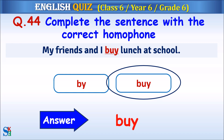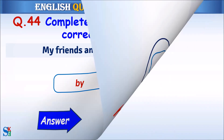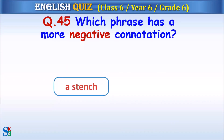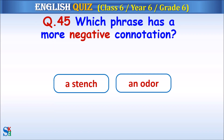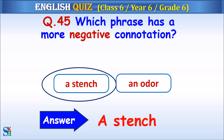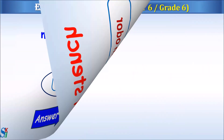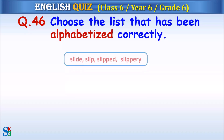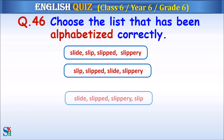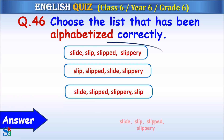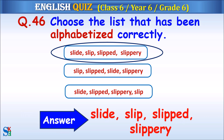Question 45: Which phrase has a more negative connotation? The answer is 'a stench.' Question 46: Choose the list that has been alphabetized correctly. The answer is: 'slide, slip, slipped, slippery.'